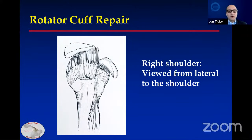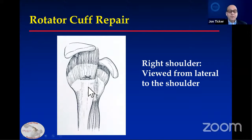Just to orient you, the subscapularis is here in the front, then the biceps and supraspinatus — which is the most common tear — and here we have infraspinatus into the teres.